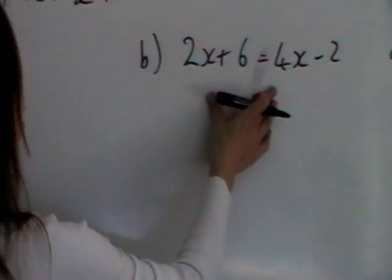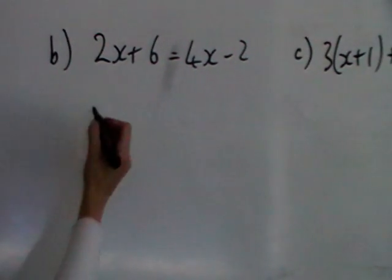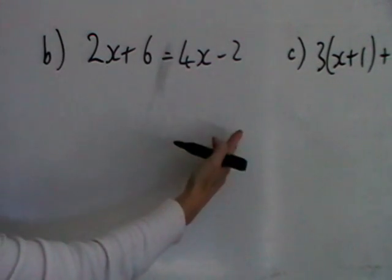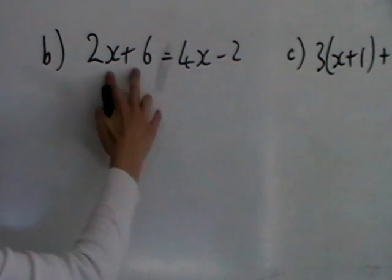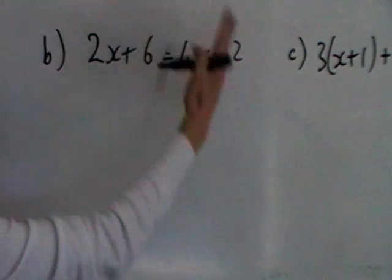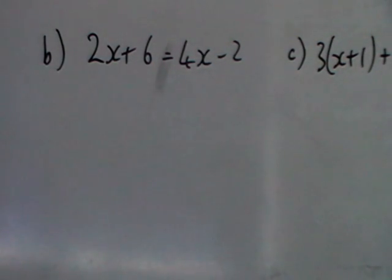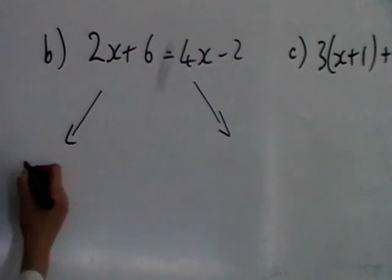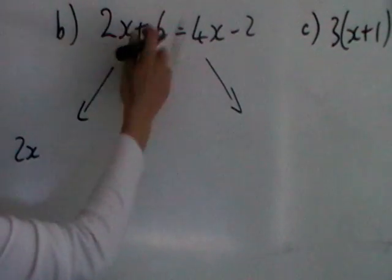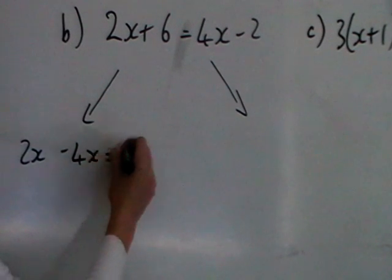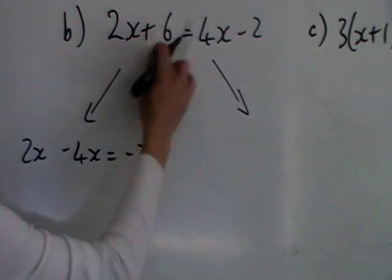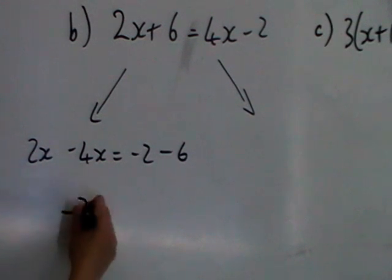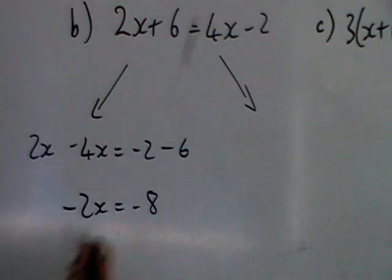Part B. Now you've got two ways of doing this one. We need the x's on one side and the numbers on the other. So you could bring the 4x over here, or you can take the 2x over there — it's up to you. So if we leave the 2x and bring the 4x over, that would leave the minus 2 and then we subtract the 6. This gives us minus 2x is minus 8.